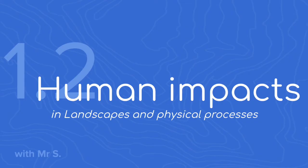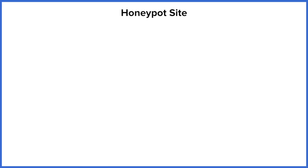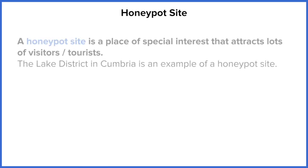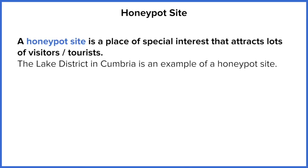Distinctive landscapes, as we now know, are unique and this draws a lot of people to visit. We call these places that attract a lot of visitors honeypot sites. So let's start off by looking at a few key definitions. A honeypot site is a place of special interest that attracts a lot of visitors or tourists. We looked last lesson at Snowdonia and that would be a good example of a honeypot site.